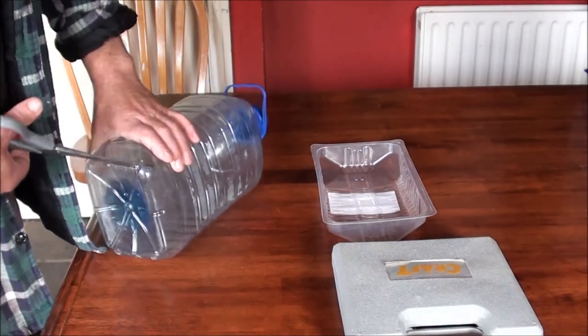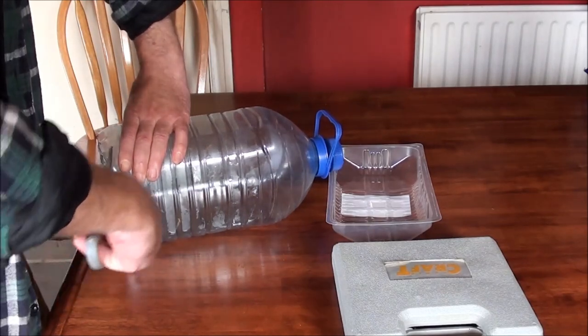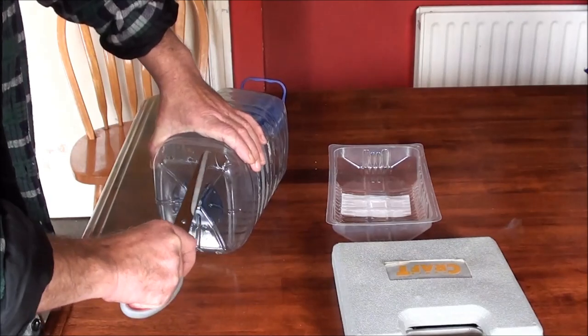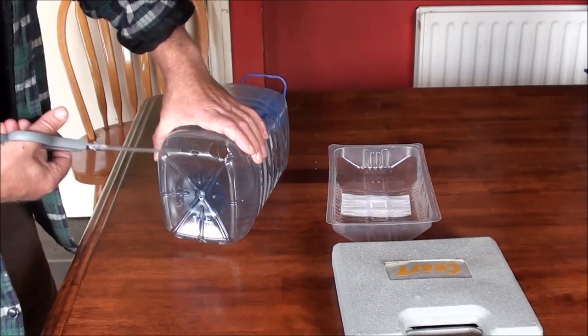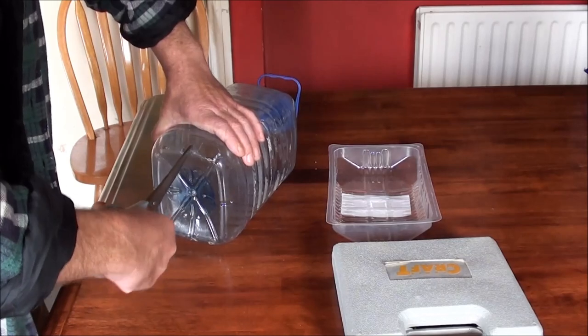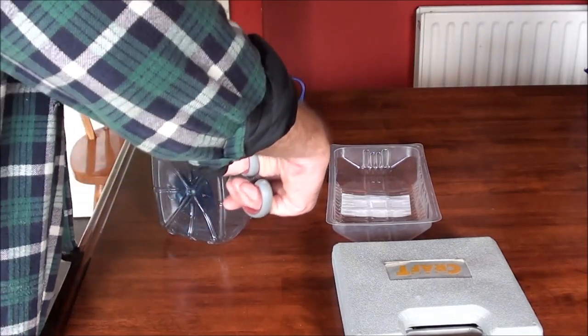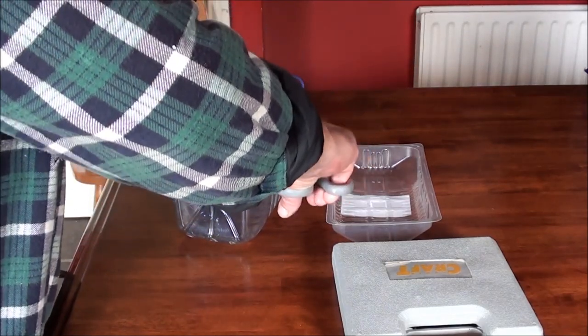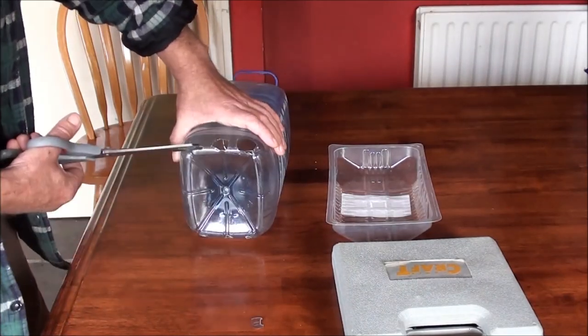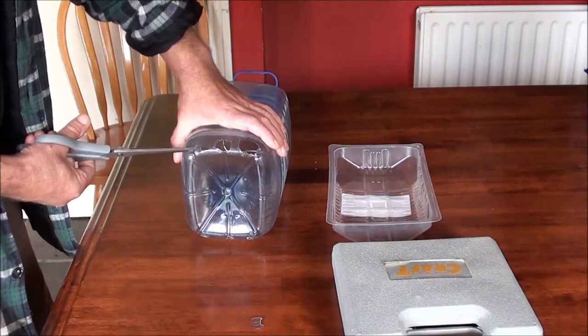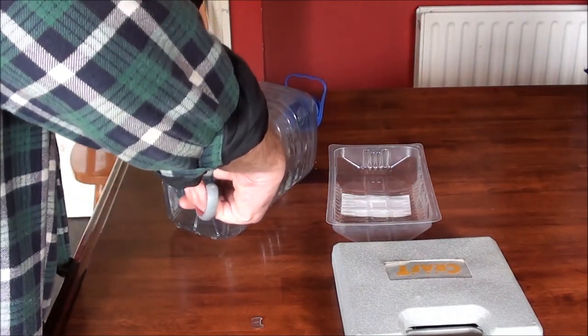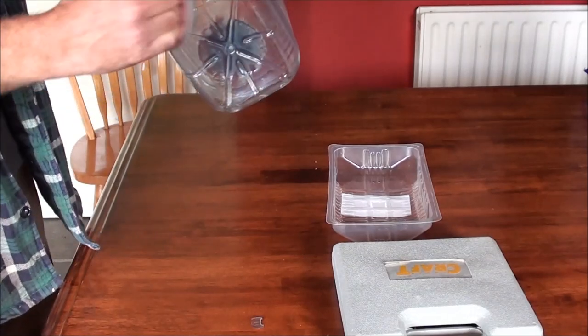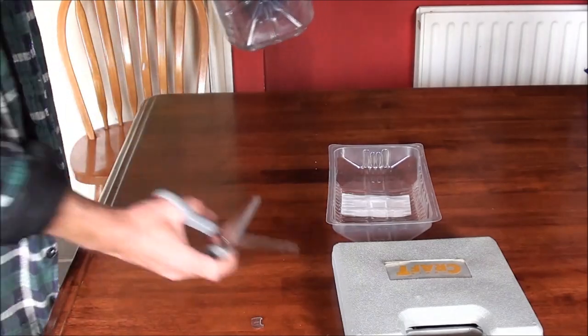So the first thing we're going to do is cut some holes at the bottom of the water container. The closer you get these to the bottom, the more seed is going to be able to come out of the bottle. Now don't go too high with it. There's the first three cut. You can of course do that with a Stanley knife or something like that.